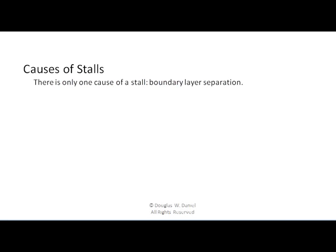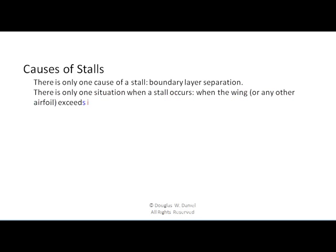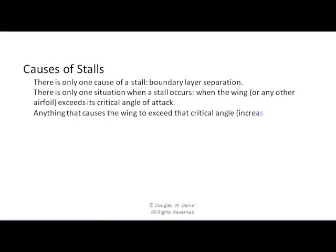There's only one cause of a stall: boundary layer separation. There's only one situation where a boundary layer can separate and cause a stall, and that is when the wing or any other airfoil exceeds its critical angle of attack. Anything that causes the wing to exceed that critical angle — increased load, high-g turns, and so forth — can be thought of as causing a stall.